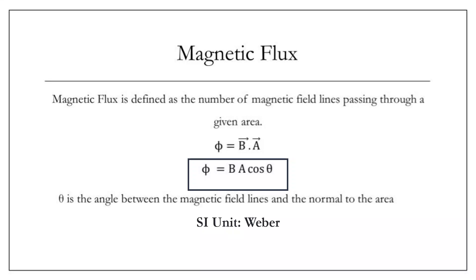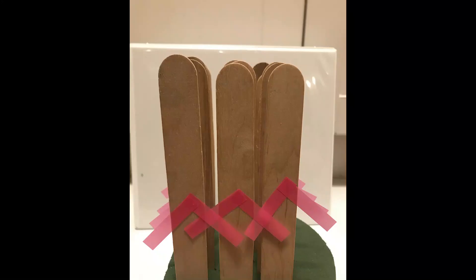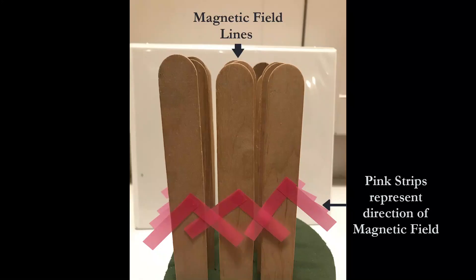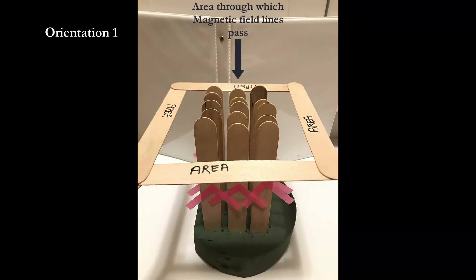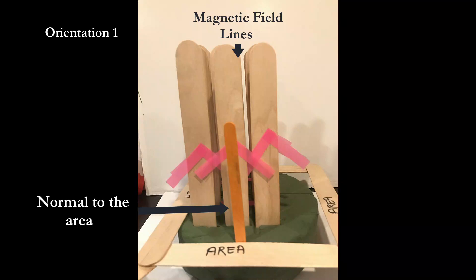Although the definition seems very simple, it is sometimes difficult to visualize magnetic flux. Therefore, to understand magnetic flux, let's consider a demonstration. In this demonstration, the vertical sticks represent the magnetic field lines and the pink strips represent the direction of the magnetic field. Firstly, let's consider this orientation, where the magnetic field lines are represented by the vertical sticks.